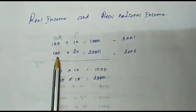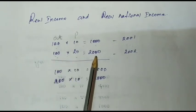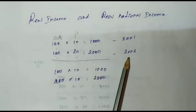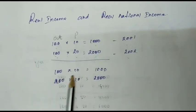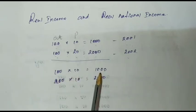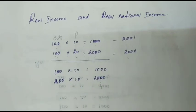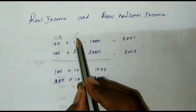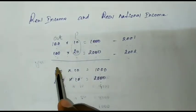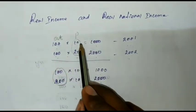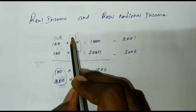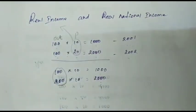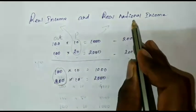Here is low output but the price increased to give 2000. Output 100 × 10 gives 1000; 200 × 10 gives 2000. What actually happened: the price increases here. Output increased, price increased. Output increases is the real national income.